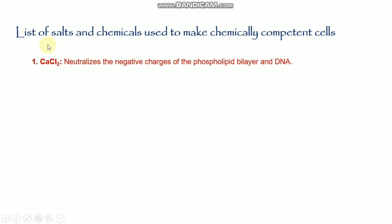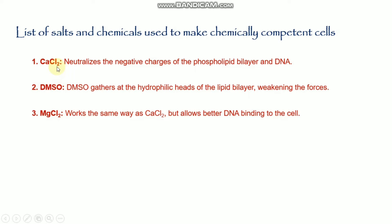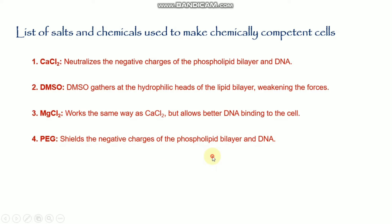Next is the list of salts and chemicals used to make chemically competent cells. The first and most common is calcium chloride, which neutralizes the negative charges of the phospholipid bilayer and DNA. DMSO weakens intermolecular forces. Magnesium chloride works similarly to calcium chloride. PEG shields the negative charges of the phospholipid bilayer and DNA. RbCl also works like calcium chloride and magnesium chloride but offers higher efficiency — those wanting a higher-efficiency transformation process should use RbCl.